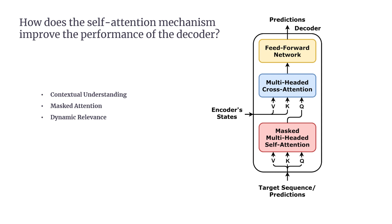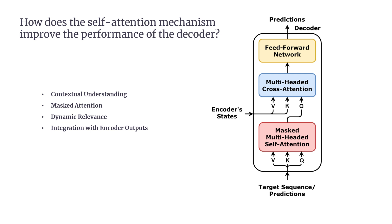Third, dynamic relevance: self-attention dynamically adjusts the decoder's focus at each step. The model evaluates all previously generated tokens and determines their relevance to the current word being predicted. For instance, if the decoder is generating the word 'apple' in a sentence about fruits, it may prioritize earlier tokens like 'fruit' or 'red' over unrelated ones like 'table.' This adaptability ensures each prediction aligns with the broader context. Fourth, integration with encoder outputs: the decoder uses cross-attention to interact with the encoder's outputs, aligning its predictions with the input sequence. In a translation task, cross-attention helps focus on the specific parts of the input most relevant for generating the corresponding output, improving accuracy and consistency.